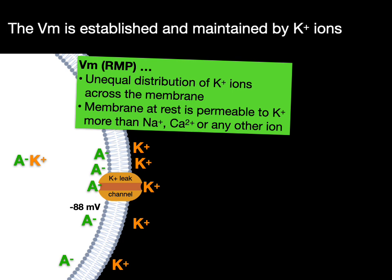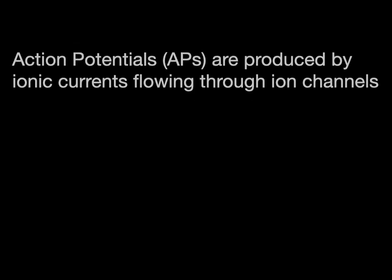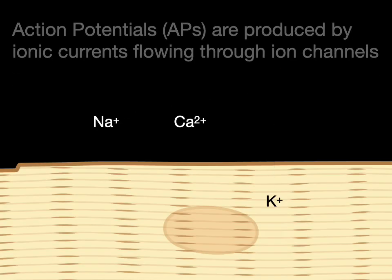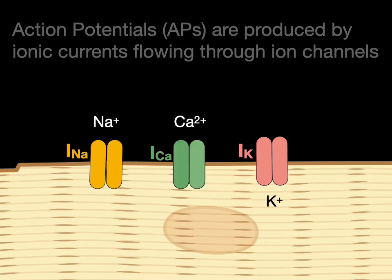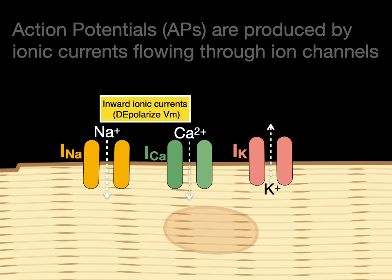Even though sodium, chloride, and calcium contribute a little bit to the resting membrane potential, as does the sodium-potassium pump, that's why for the cardiac muscle cell it's at negative 80 millivolts. Almost all of that VM is caused because of the unequal distribution of potassium and the permeability of potassium because of those potassium leak channels. The VM is established and maintained by potassium ions. Action potentials are produced by ionic currents flowing through ion channels.